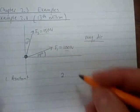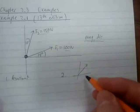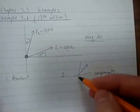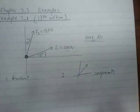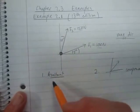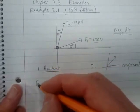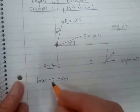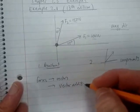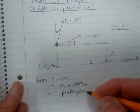In previous videos I mentioned we either want to find a resultant force of a number of forces, or if we have a single force and some arbitrary directions, we want to find components along those axes. In this example we are trying to find the resultant of two forces, and because forces are vectors, we need to carry out vector addition, which means we need to use the parallelogram rule.